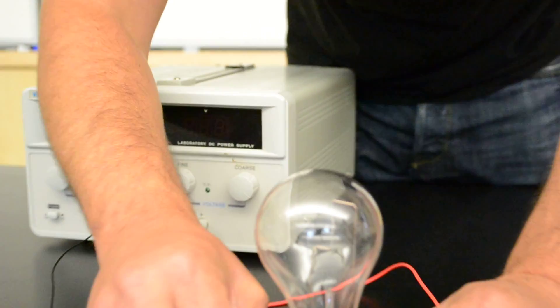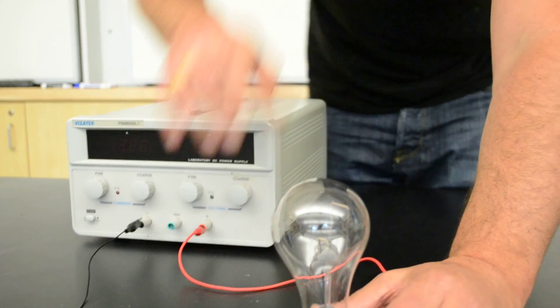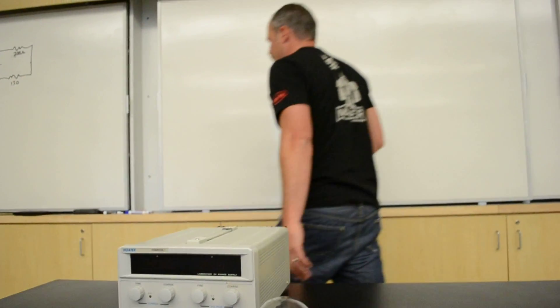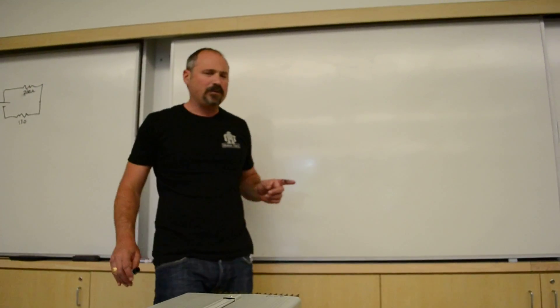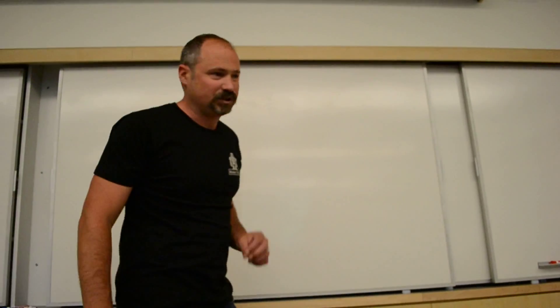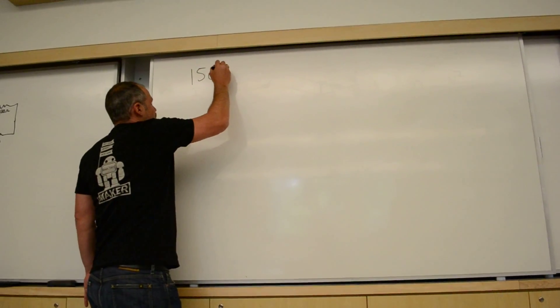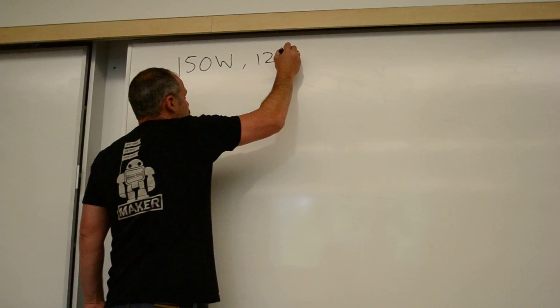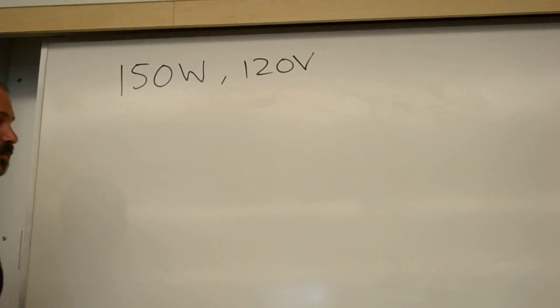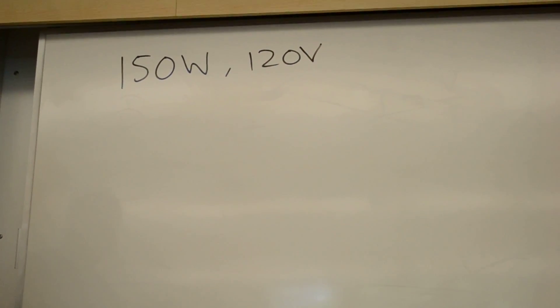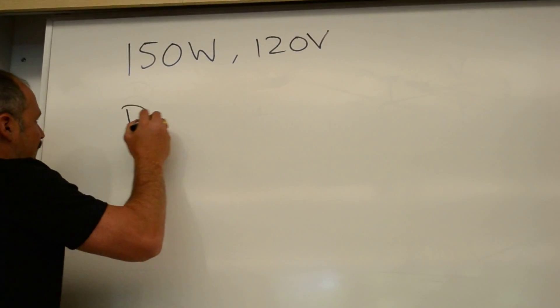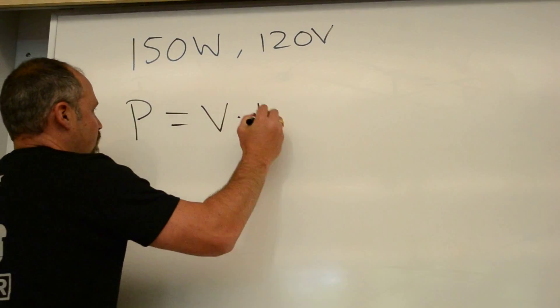Let's figure out how bright the light bulb shines when it's run at 70 volts. In order to do that, we first have to define the key characteristic of the light bulb, which is its resistance. What do we know? We know it's 150 watts when run at 120 volts. We also know that power is voltage times current.